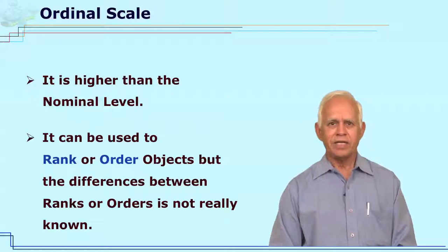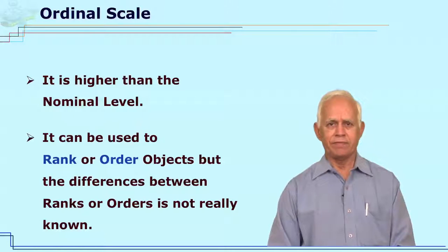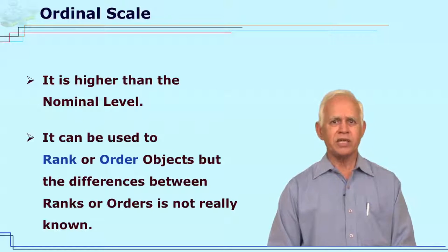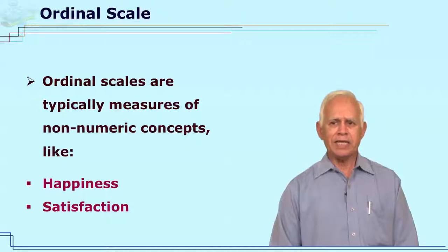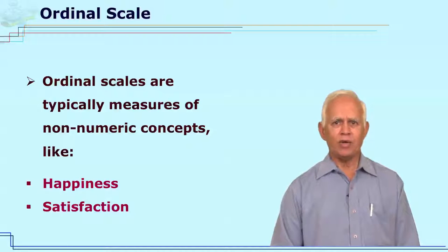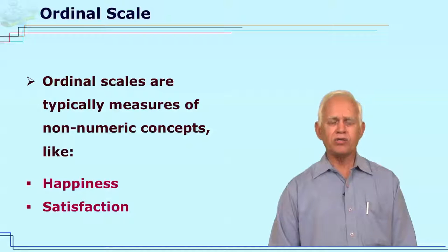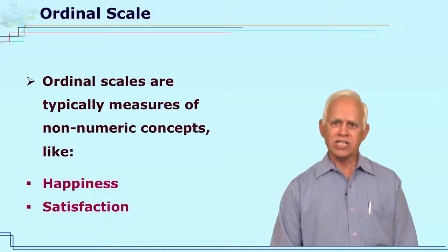Next scale is the ordinal scale. Ordinal scale is higher than the nominal scale. In the ordinal scale, one can sequence, arrange things in some order, or one can assign ranks. In ordinal scale, it is typically a non-numeric scale where you can say whether one is happy or unhappy. One cannot really say the degree of happiness and degree of unhappiness, the satisfaction, etc.